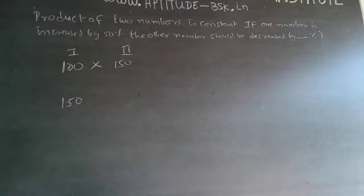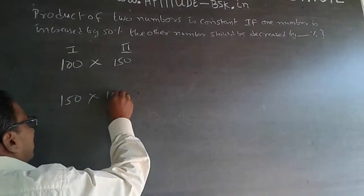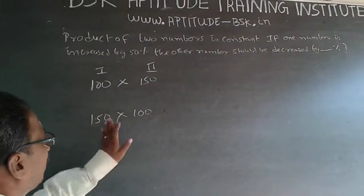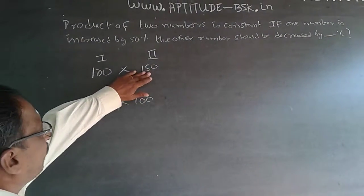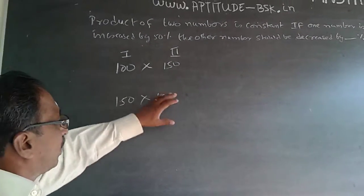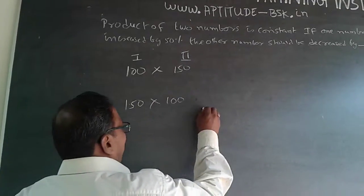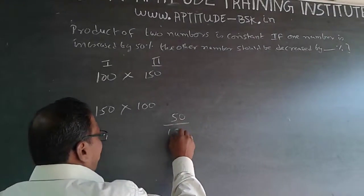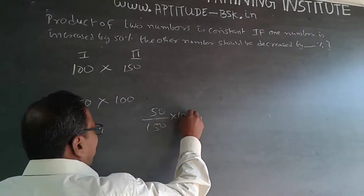Because the product is constant, this hundred has to come here. Now the product will be constant. This 150 is getting reduced to 100. The reduction is 50. So for 150, the reduction percentage is 50/150 × 100 = 33.33%.